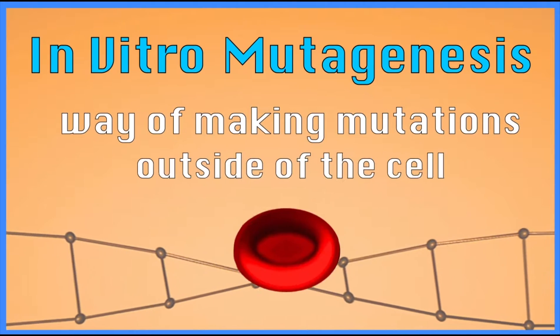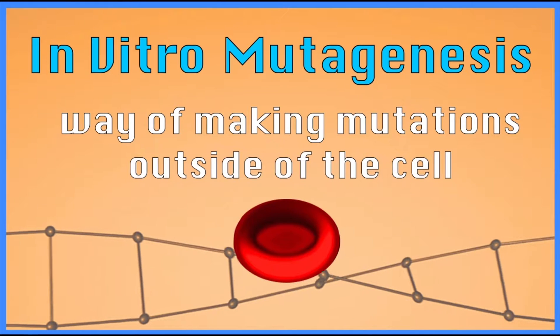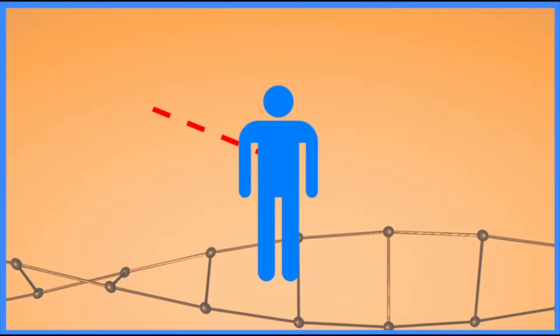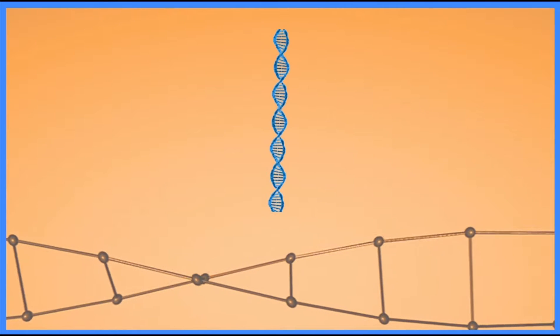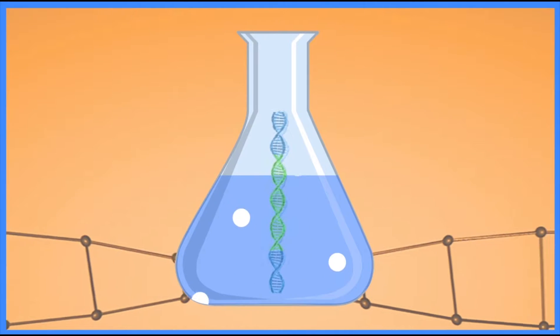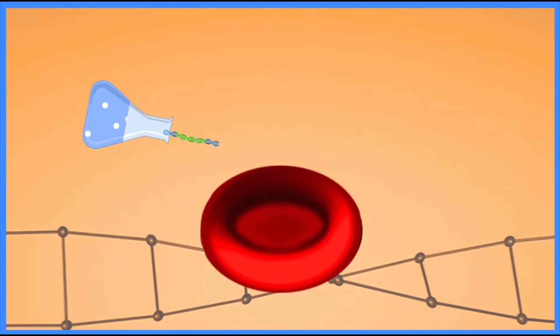So it's a way of making mutations outside of a cell. You could imagine, like, you notice that people who have a certain type of cancer have a certain mutation, and you want to study that in cells. So you would take the DNA, mutate it in a test tube, put it back into a cell, and then study the function.